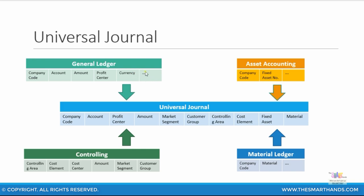In fixed asset accounting, you have your fixed asset number, sub-number, and so on. These are also copied across to the universal journal table.